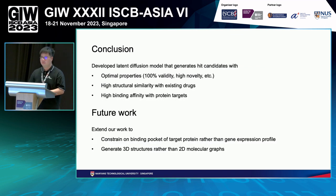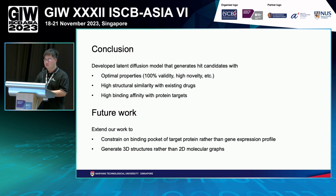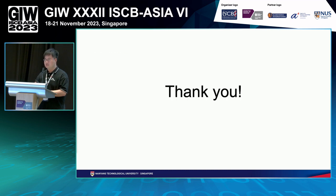For a brief summary, we developed a latent diffusion model that generates hit-like molecules with optimal properties, such as 100% validity, high novelty, high structural similarity with existing drugs, and high binding affinity with potential protein targets. In the future, we shall consider extending our work to constrain on the binding pocket of the target protein rather than just gene expression profiles. We can also consider generating 3D structures rather than 2D molecular graphs for a more accurate description of the structure. That's all for my presentation. Thank you.